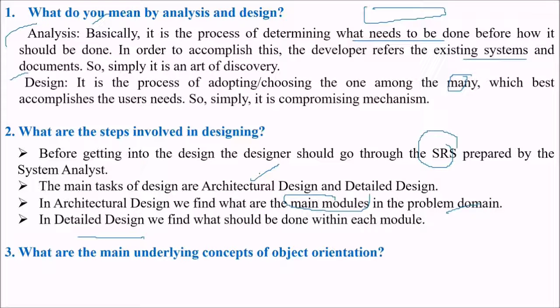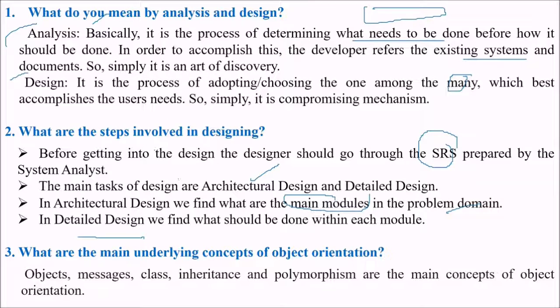What are the main underlying concepts of object orientation? First of all, the objects, object orientation, messages, class, inheritance and polymorphism. These are the main concepts of object orientation.